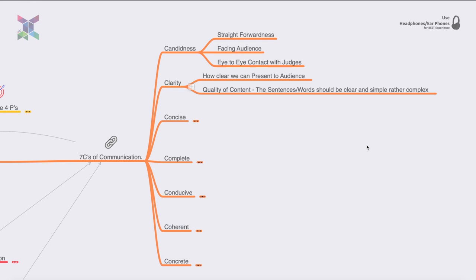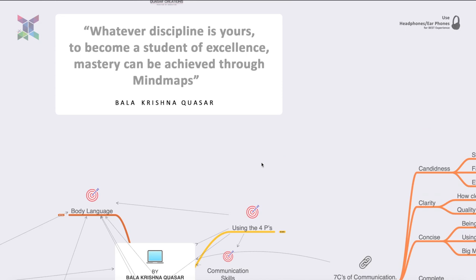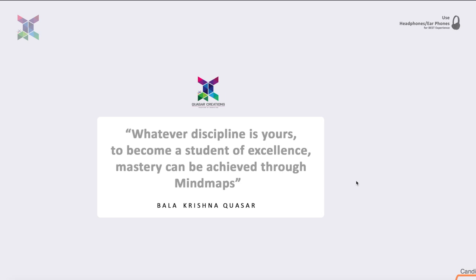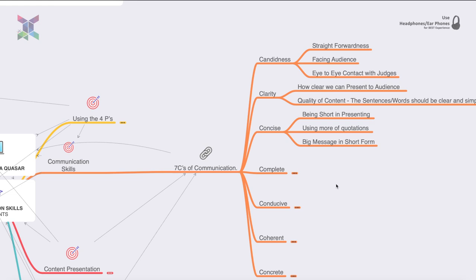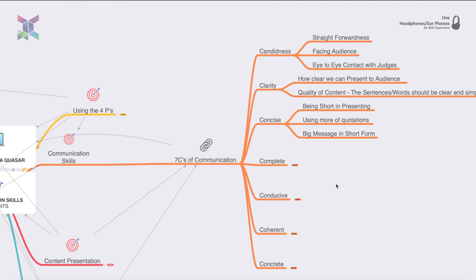Conciseness means being very short in presentation — not too much elaboration for each important aspect. Using quotations plays a crucial role in creating concise presentations. A big message can be conveyed in short form through a picture or pictorial representation — that is the most important concise, precise information piece.